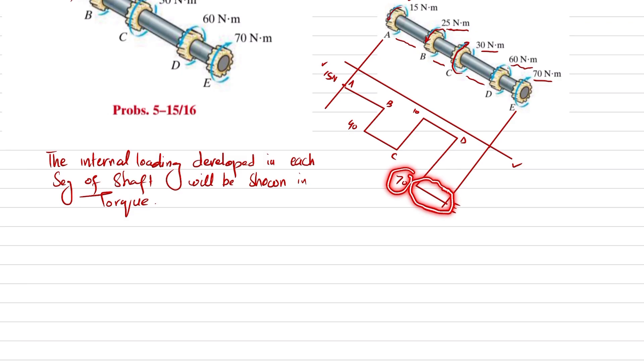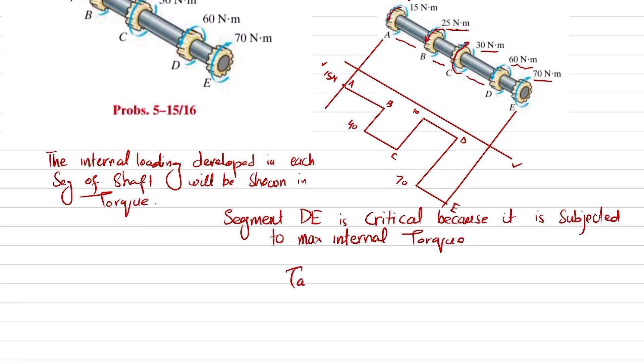You can see from this torque diagram that maximum torque is in segment DE, which is 70. So we will take this torque DE for finding the diameter. Segment DE is critical because it is subjected to maximum internal torque.